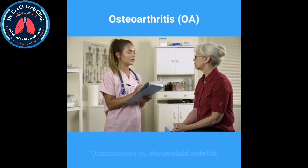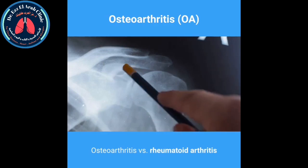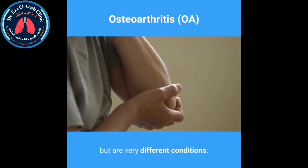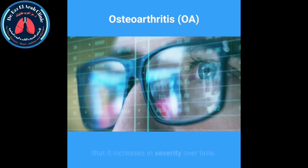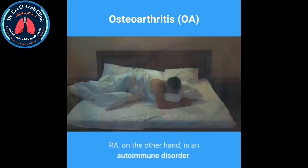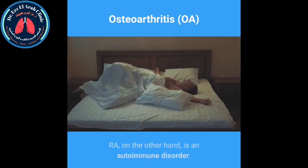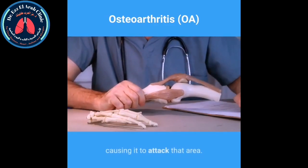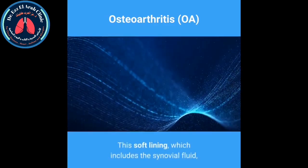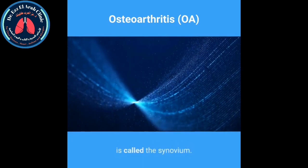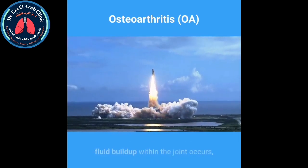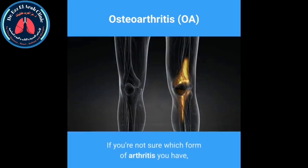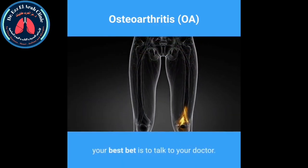Osteoarthritis versus rheumatoid arthritis. OA and rheumatoid arthritis (RA) share the same symptoms but are very different conditions. OA is a degenerative condition that increases in severity over time. RA, on the other hand, is an autoimmune disorder — people with RA have immune systems that mistake the soft lining around joints as a threat, causing it to attack that area. This soft lining, which includes the synovial fluid, is called the synovium. The resulting fluid buildup within the joint causes stiffness, pain, swelling, and inflammation. If you are unsure which form of arthritis you have, talk to your doctor.